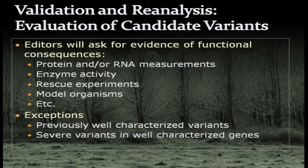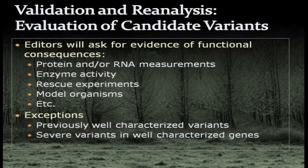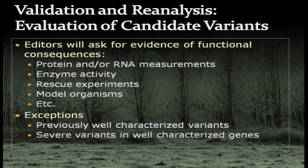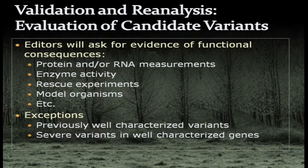From our experience, editors will ask for evidence of functional consequences. Nearly every paper we publish with exome data requires protein and RNA measurements, enzyme activity, rescue experiments, or model organism data to show you found the right thing. Exceptions are probably previously well-characterized variants and severe variants in well-characterized genes, but even then some experimental evidence may be required.